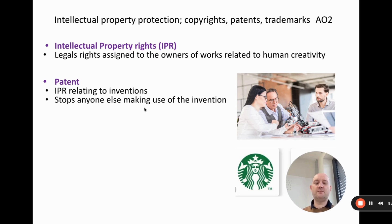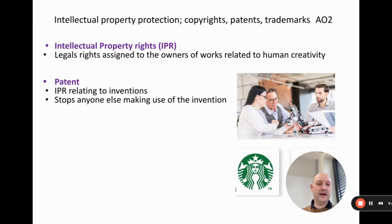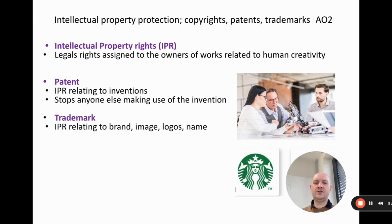The first is a patent, which covers intellectual property rights related to inventions. A patent stops anyone else from making use of that invention. If a business comes up with a new idea for a product and gets a patent on it, no one else can actually produce that product — which is a really big advantage for the business and one of the major benefits of R&D.